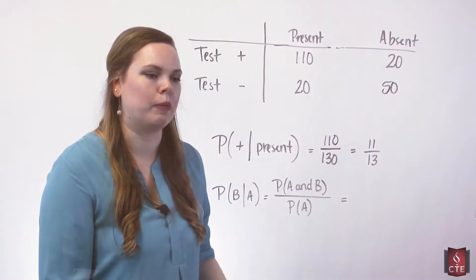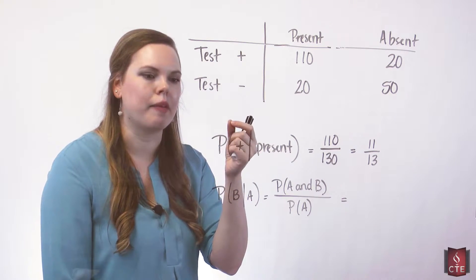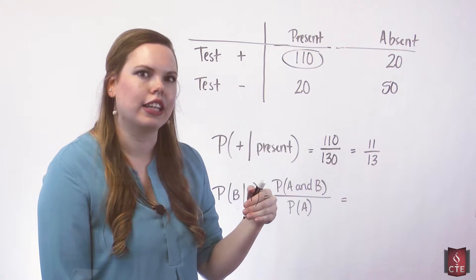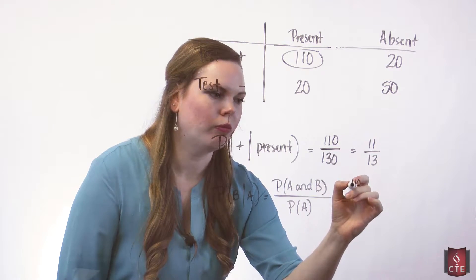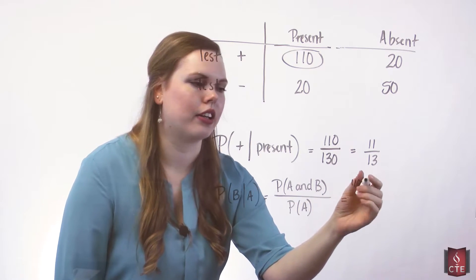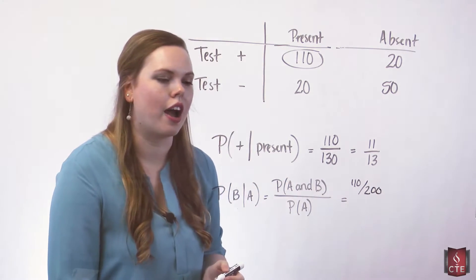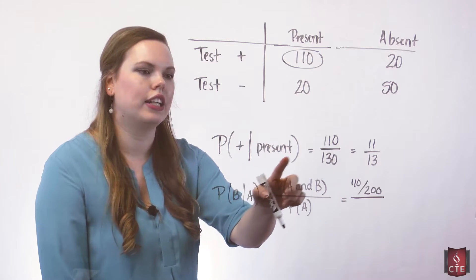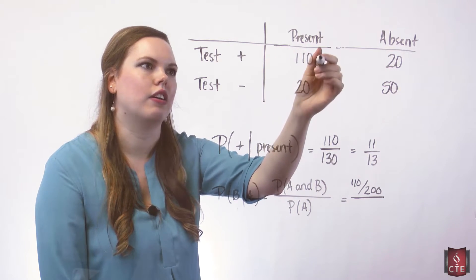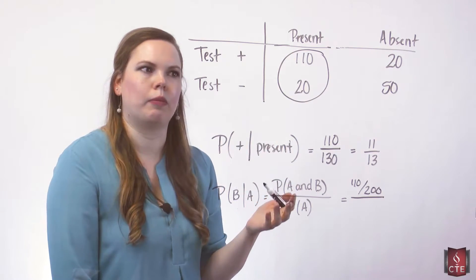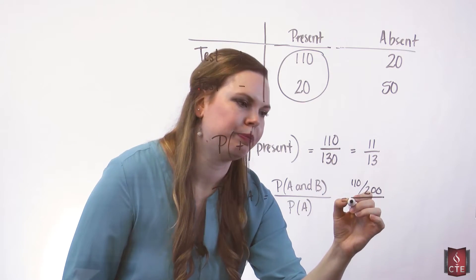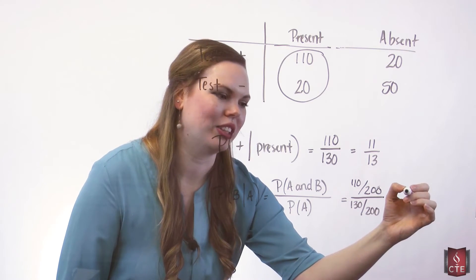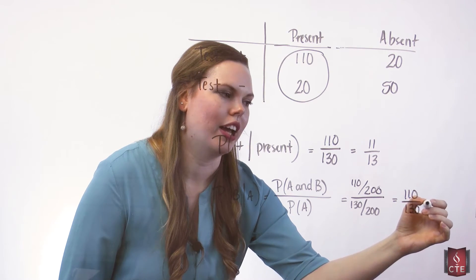We are out of everyone, all 200 people here. The probability of A and B would be the overlap between positive and present — these 110 people who have the condition and got a positive result. So the probability of A and B is 110 out of 200. The probability of A, the probability that the condition is present, is 130 out of 200, since all those people have the condition. This reduces because of the common 200, giving us 110 out of 130, which then reduces to 11 out of 13.